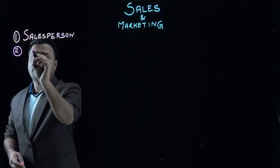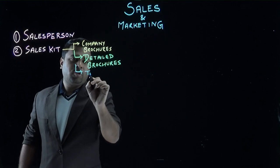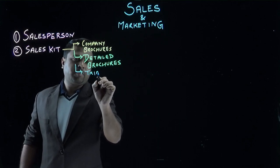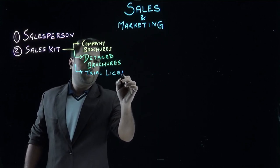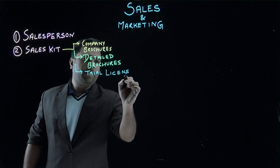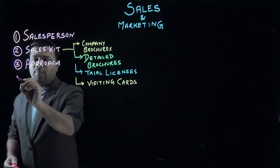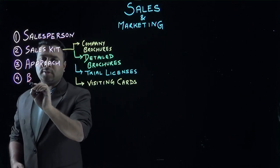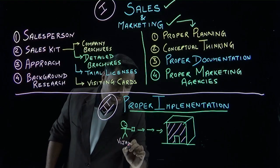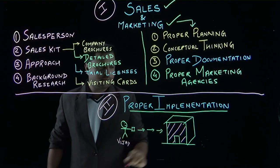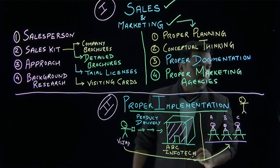Second, we will see the sales kit to present. While license is important to give them a demo, visiting cards, approach. Fourth thing, background research. Vijay, the salesperson — the unbeatable service on the internet, the international mobile.